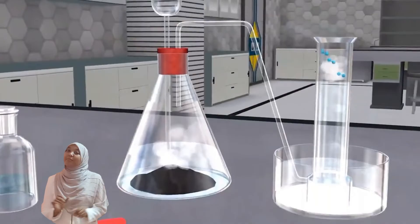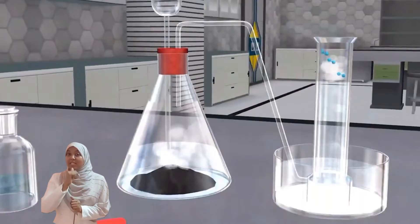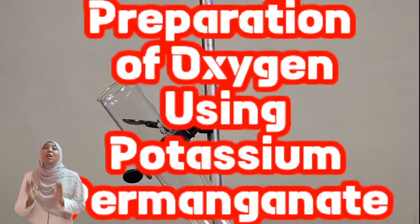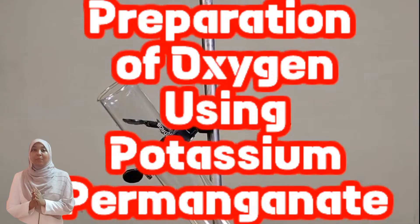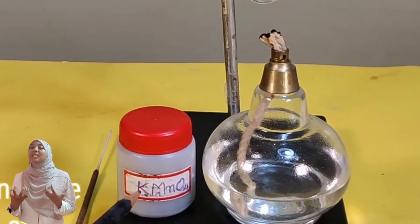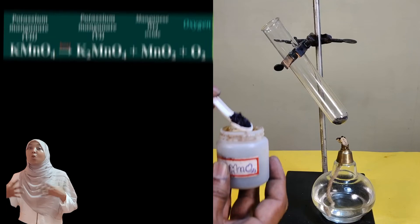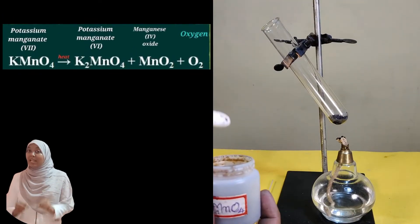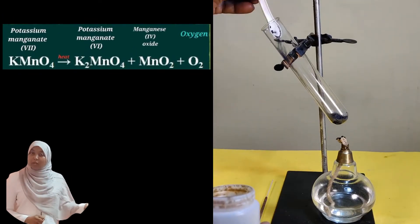That brings us to the end of the first method. Second method: potassium manganate 7 (KMnO4). Potassium manganate 7 is a dark purple solid. On heating, it decomposes, breaking down and leading to the formation of three products.